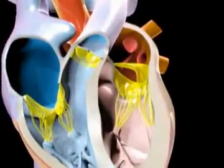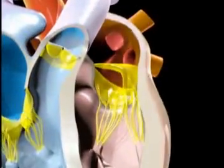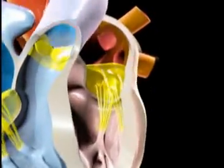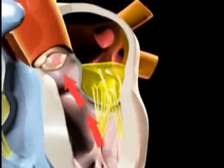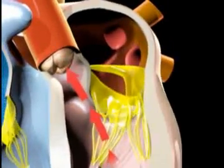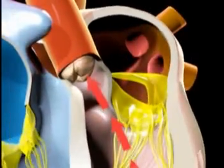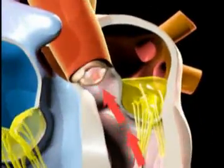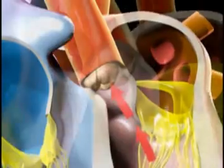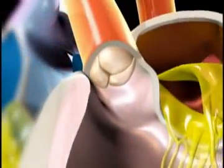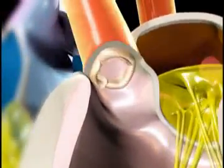As the powerful left ventricle contracts, the mitral valve shuts, preventing backflow into the left atrium. The aortic valve opens and blood is forced into the aorta, which distributes it to the rest of the body apart from the lungs. As the contraction comes to an end and pressure in the aorta falls, the aortic valve snaps shut to prevent backflow into the left ventricle.